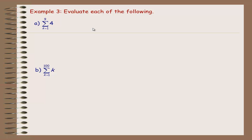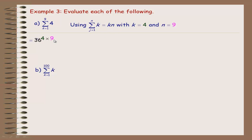For the first evaluation example, k goes from 1 to 9 and the sum term is just 4 — a constant. Every single term is 4. Using the constant summation property, k = 4 and n = 9, so the sum is 4 · 9 = 36. Alternatively, you can observe that k goes from 1 to 9, giving nine 4's, which of course is 36.